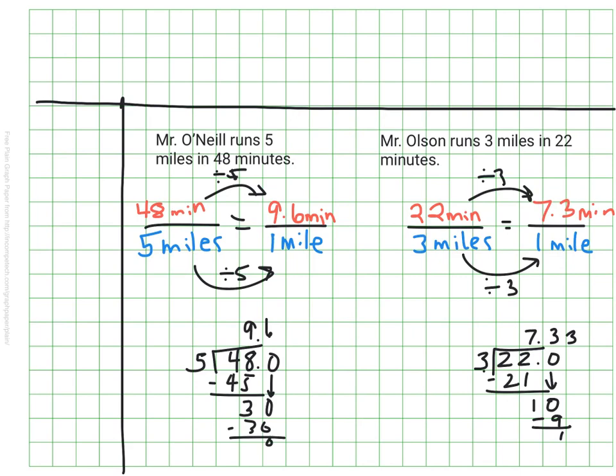And now that I have that, I can compare their one mile times and I can see here that Mr. Olson can run faster because it takes him less time to go just one mile.